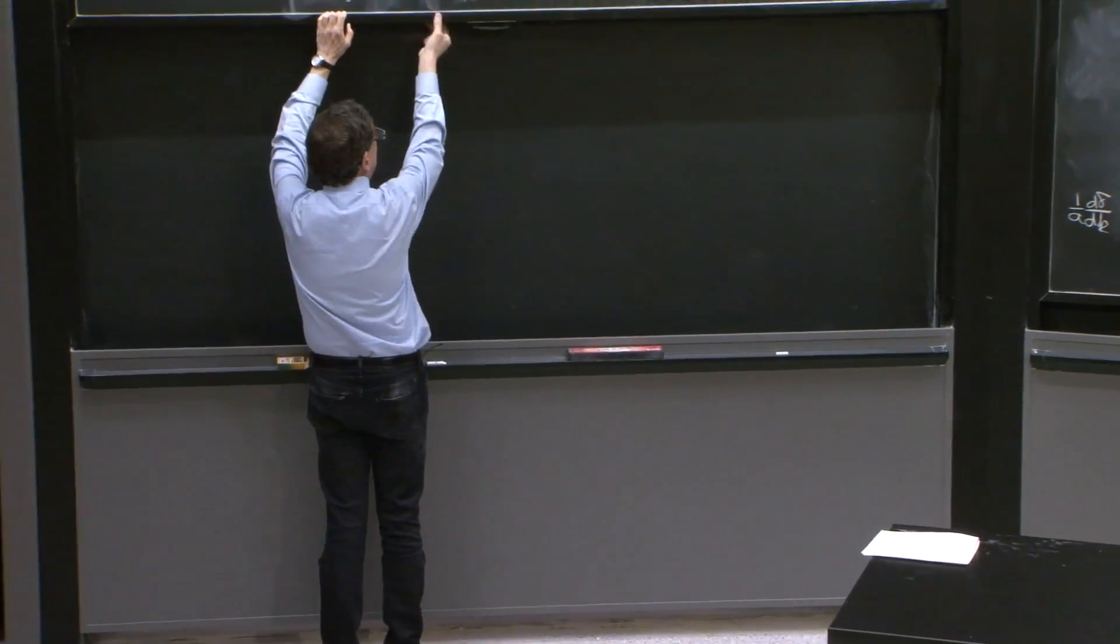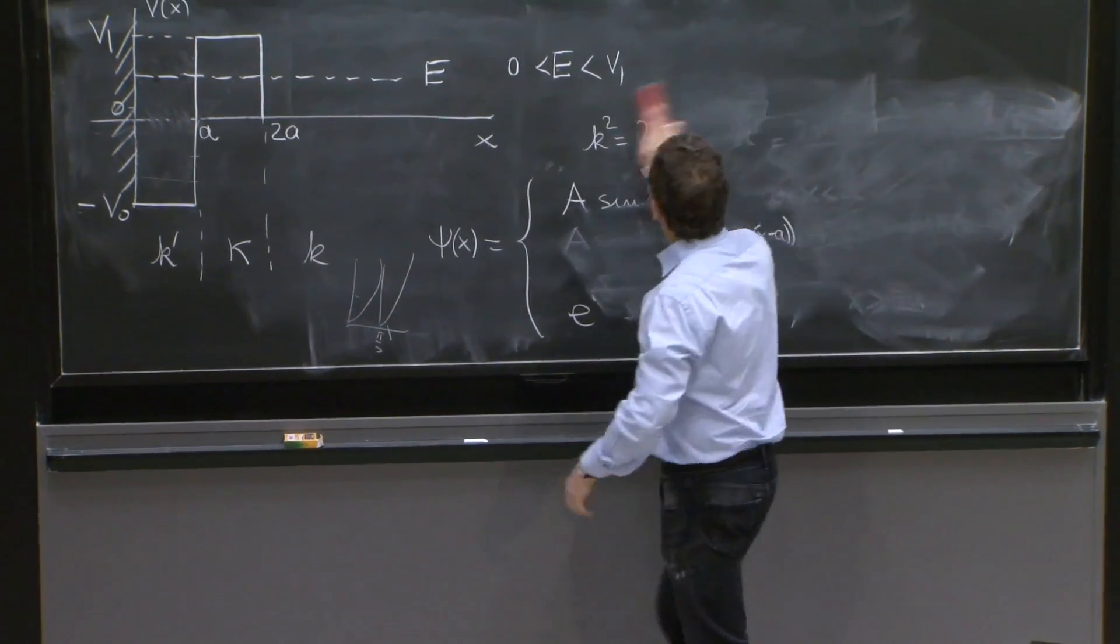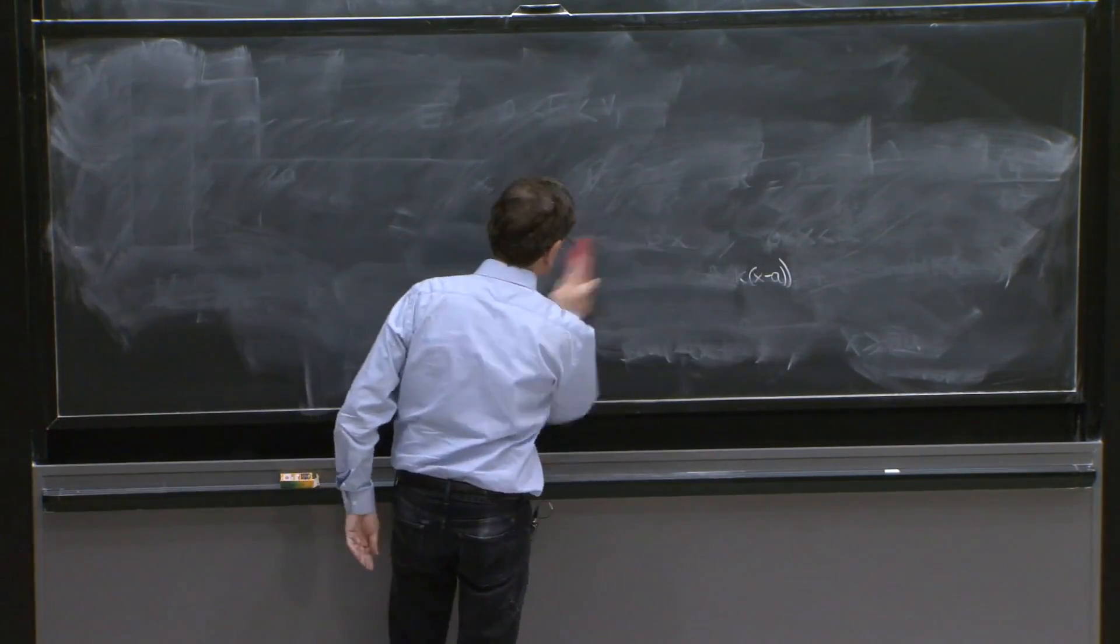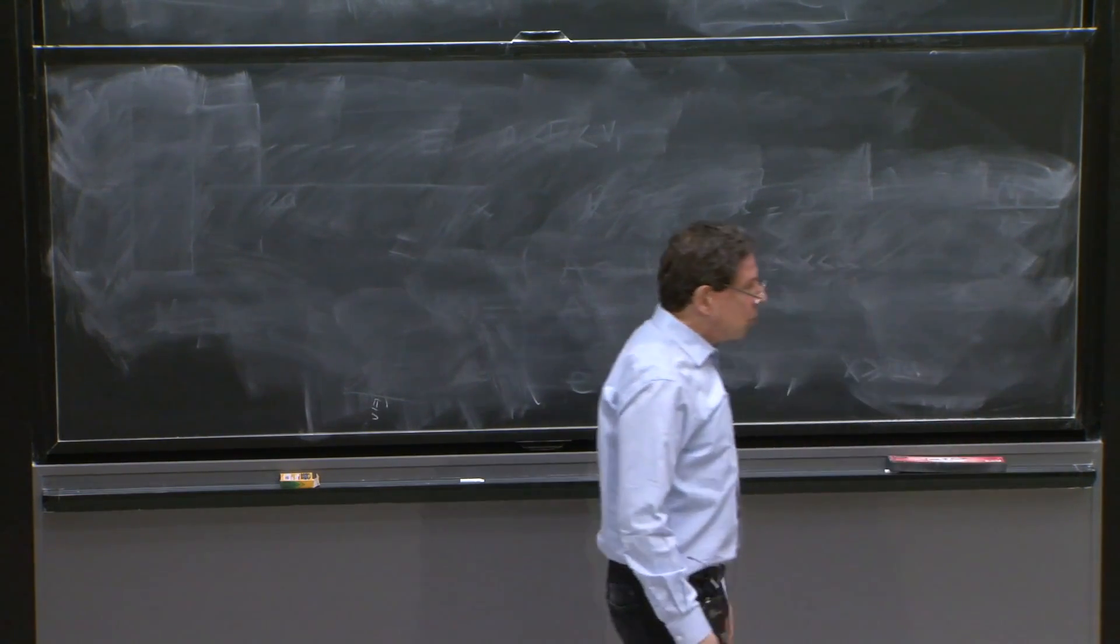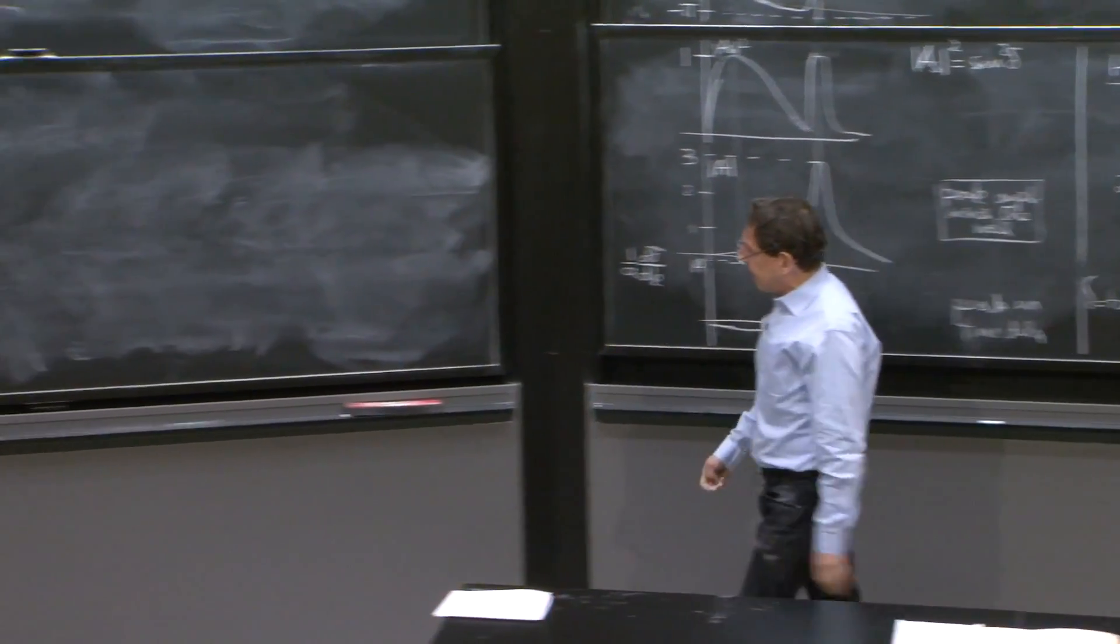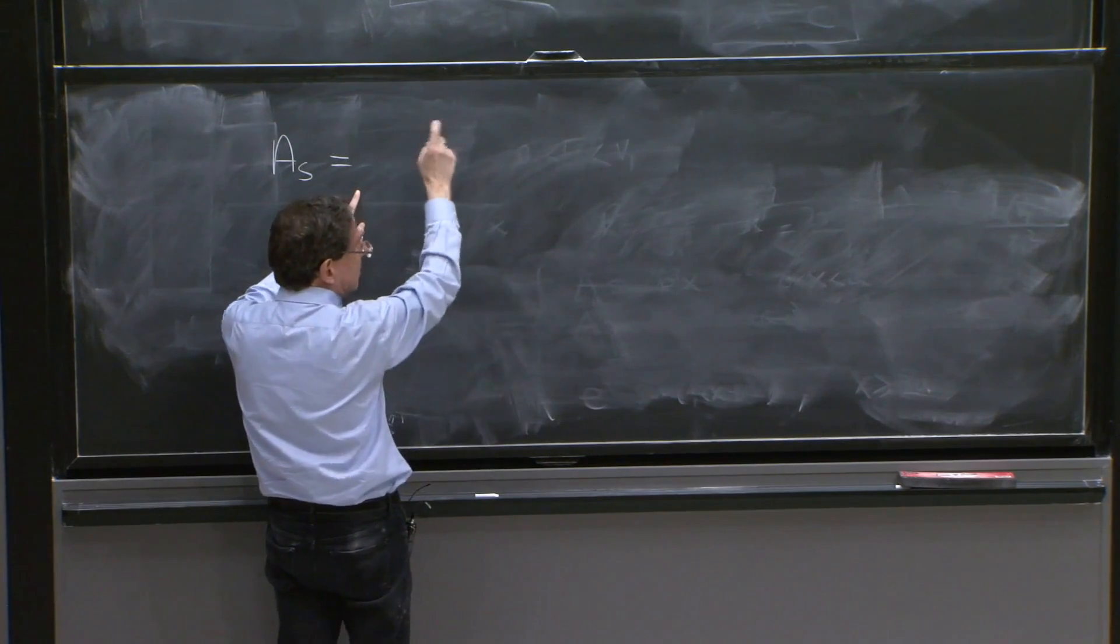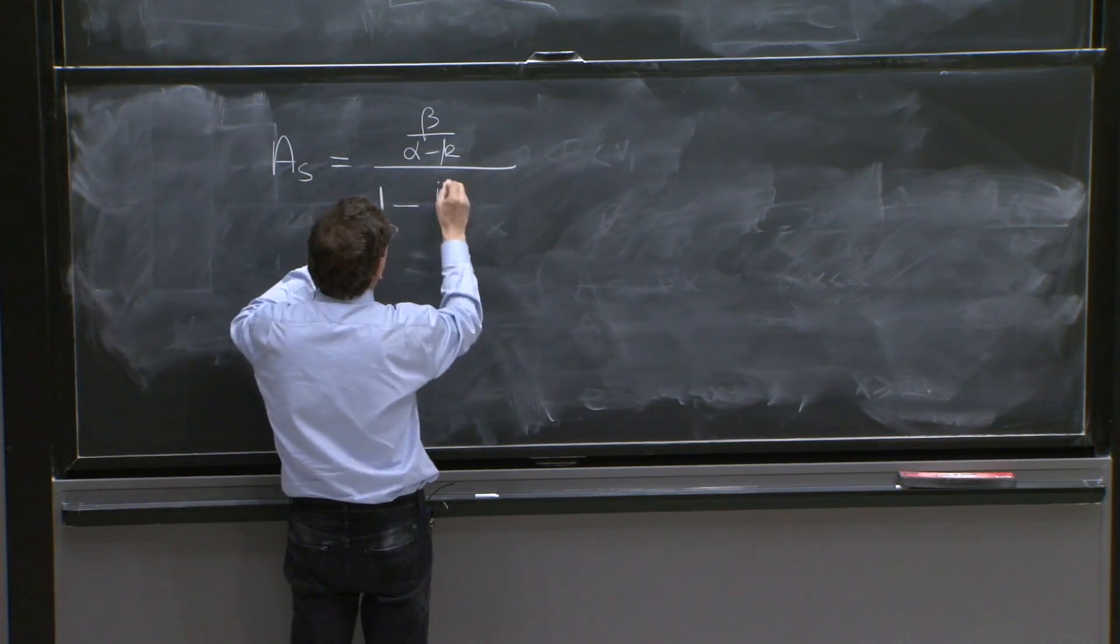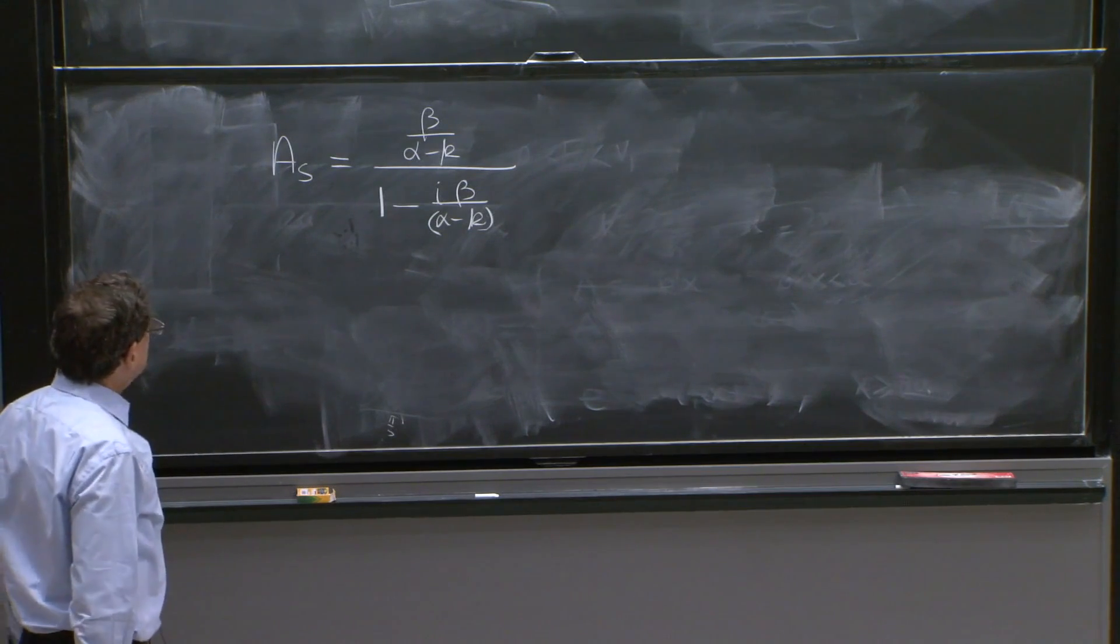And we can try to argue that by looking back at what resonances do. So what I will do is look, we've modeled a resonance here, tangent delta. So let's look at what As does. We have it there. As is tan delta. Well, tan delta, we had it in the middle blackboard, is beta over alpha minus k, over 1 minus i beta over alpha minus k again. So that's how As behaves in general.